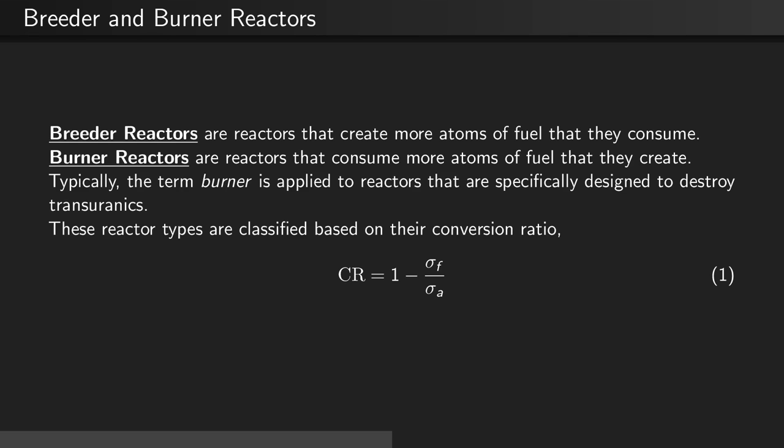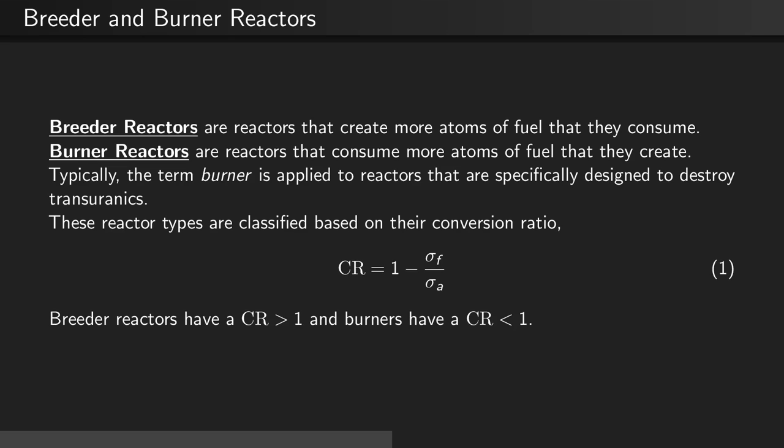These reactor types are classified based on their conversion ratio. CR equals 1 minus the ratio of σf to σa. Breeder reactors have a conversion ratio greater than 1, and burner reactors have a conversion ratio less than 1.